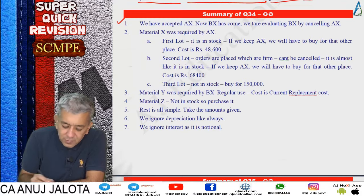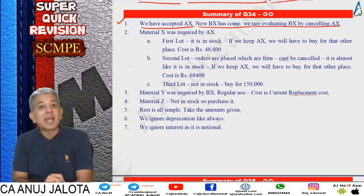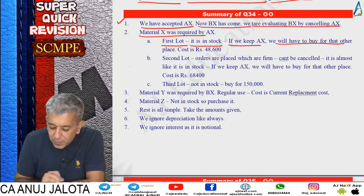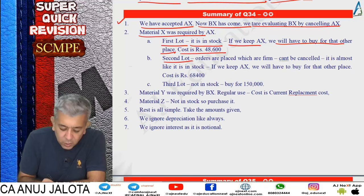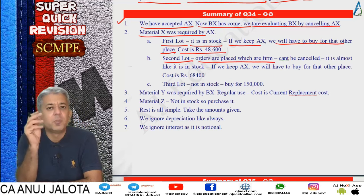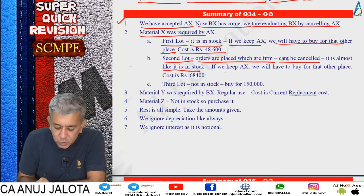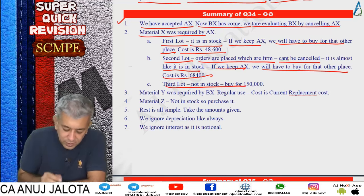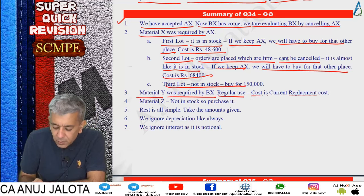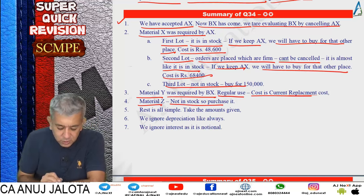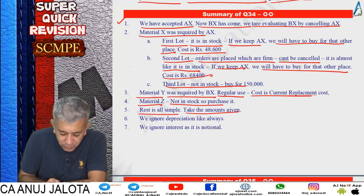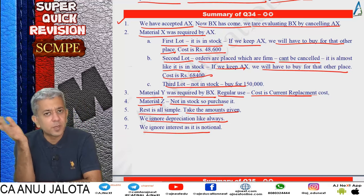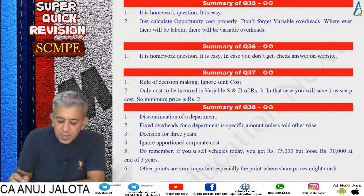Summary of Q34: we've accepted AX; BX has now come and we're evaluating cancelling AX. Material X first lot - in stock, keep AX means buying elsewhere at 48,600. Second lot - firm orders, same treatment, 68,400. Third lot - not in stock, purchase at 1,50,000. Material Y for BX - regular use, so current replacement cost. Material Z not in stock - purchase it. Ignore depreciation always. Ignore interest on working capital as it's notional only. Head office apportionment - ignore.